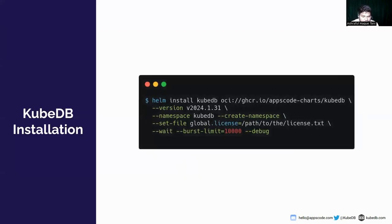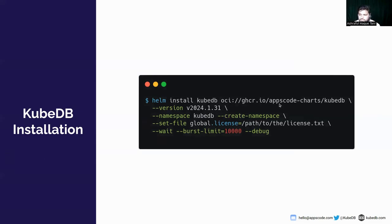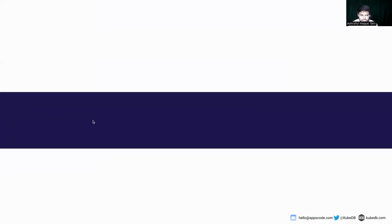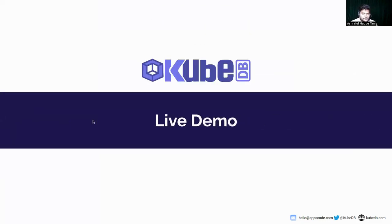For the live demo, I have already installed KubeDB in my local kind cluster using the latest KubeDB version which includes SingleStore support. For more information about KubeDB, feel free to explore our website kubedb.com. You can install KubeDB using the Helm chart and get the license from kubedb.com. Before jumping into the live demo, I just want to describe the YAML that I will deploy.